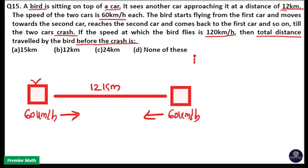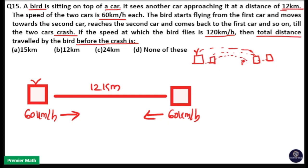The bird flies from the first car to the second car. By the time the bird flies, the first car moves forward and the second car moves forward too. Then the bird comes back to the first car, and again goes to the second car. This continues, back and forth, until the two cars crash.